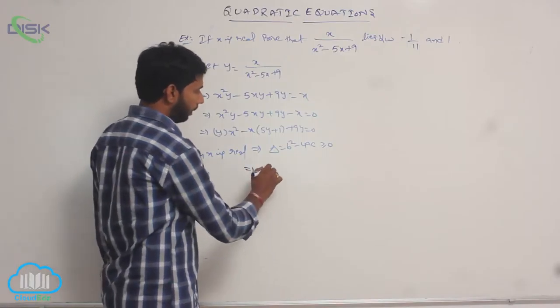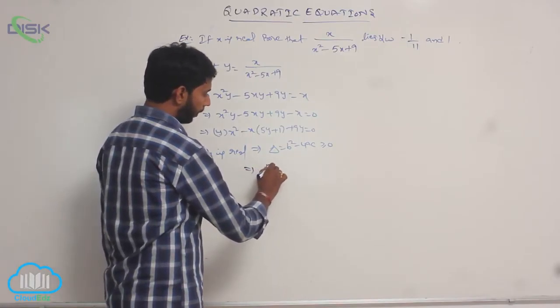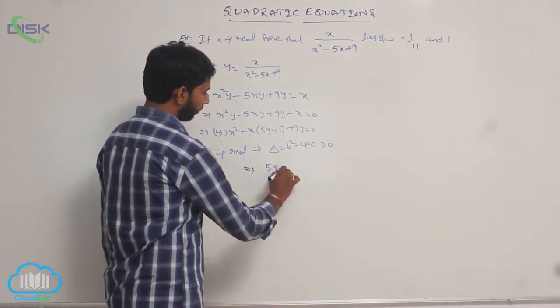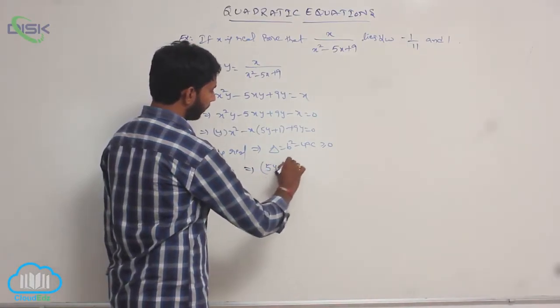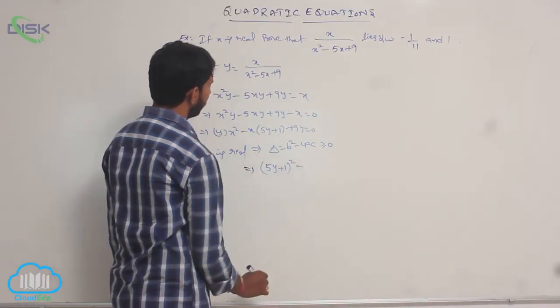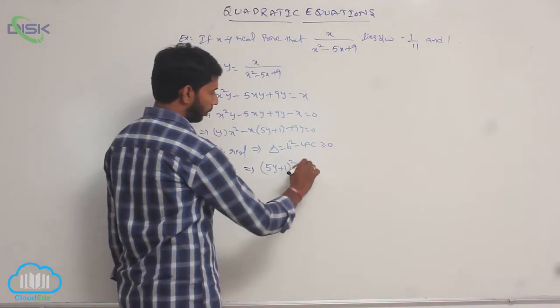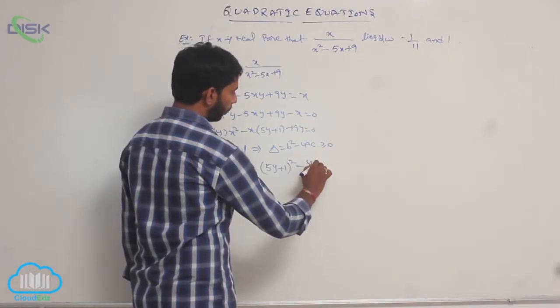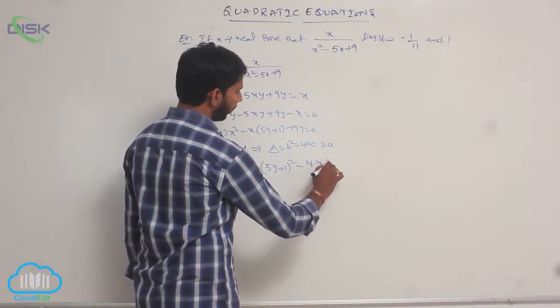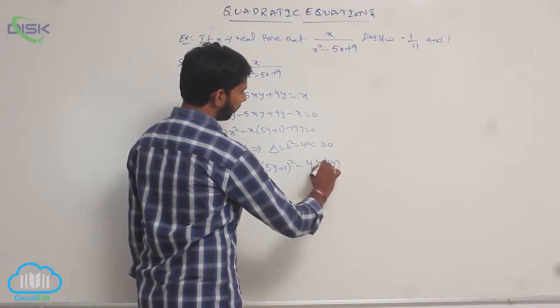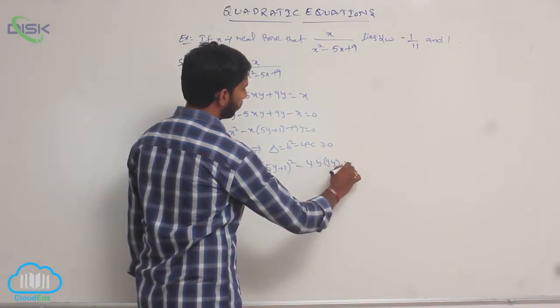Here b = (5y + 1), so: (5y + 1)² - 4·y·9y ≥ 0.